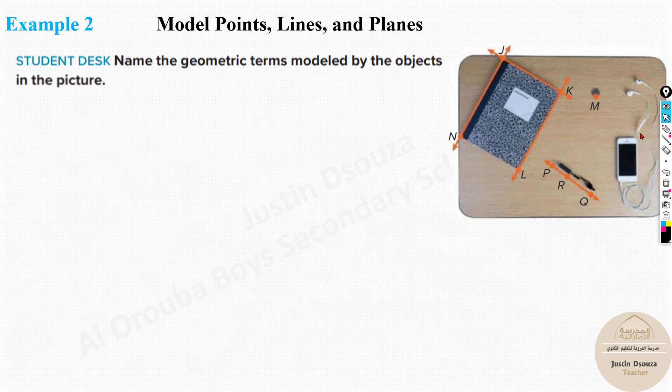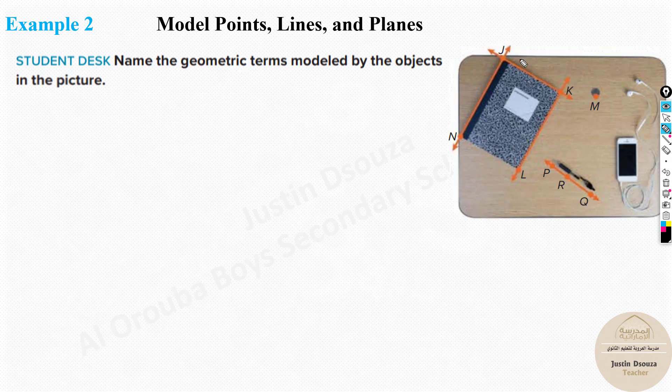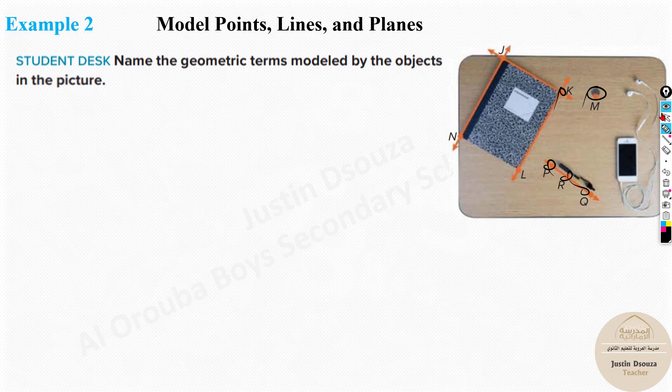Now we have to name the geometric terms modeled by each of these objects over here. You can see, first of all, a book is a plane. So you can tell J, K, L is a plane or N, J, K or J, K, N, anything. This is a plane. And you can see this is a line, this is a line, this is a line. Over here also there is a line. There are plenty of things you can model. A line NJ, JK, KL or LK, PQ or PR or RQ. These are all lines. And look at this point. This is point, this is point, point, point, point. It's a very, very basic question. There's nothing much in this.